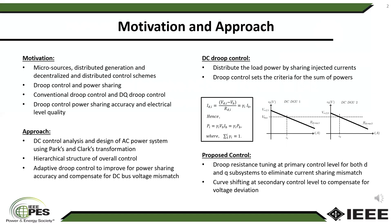The approach in this work is to use DC control analysis and design for an AC power system using Park's and Clarke's transformation. The overall approach is to use a hierarchical structure for the overall control and also use adaptive droop control to improve power sharing accuracy and also compensate for DC bus voltage mismatch.